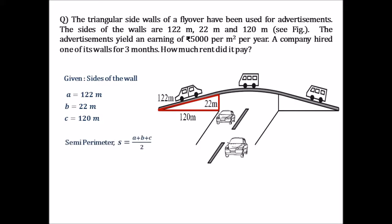To get the semi-perimeter: S equals (A plus B plus C) divided by 2. Putting in the values: S equals (122 plus 22 plus 120) divided by 2, which gives us 264 divided by 2. So our semi-perimeter S equals 132m.